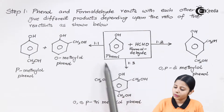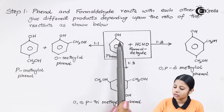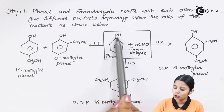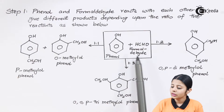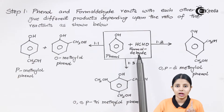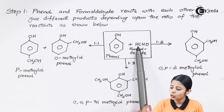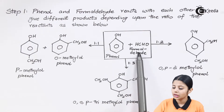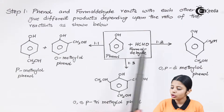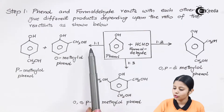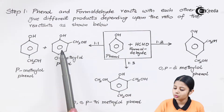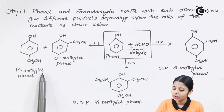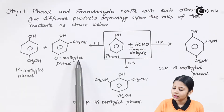Let's start with the 1:1 ratio. Reactant number one is phenol — a benzene ring with an OH group on it. Formaldehyde is the very first aldehyde; the CHO group is the aldehyde group, and adding an H to it gives formaldehyde. If both reactants are taken in a 1:1 proportion — that means equally — I will get two products: P-methylol phenol and O-methylol phenol.